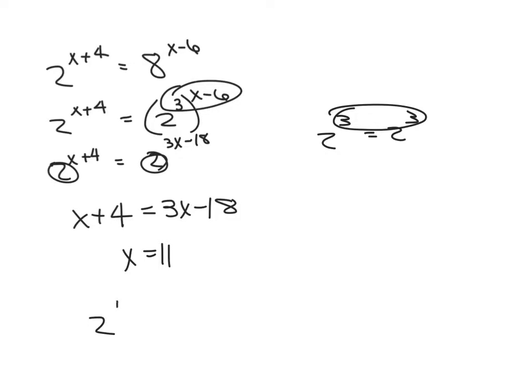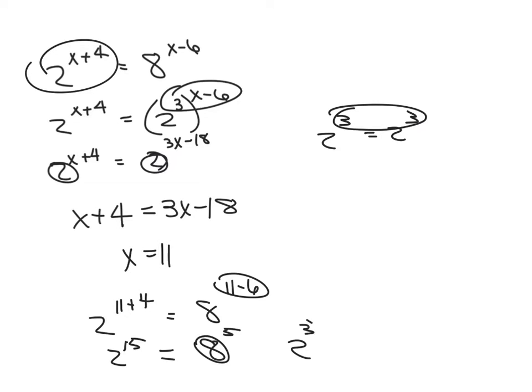So that means 2 to the 11 plus 4, my original problem, is going to be equal to 8 to the 11 minus 6. So let's see what happens here. 2 to the 15th equals 8 to the 5th. Well, 8 can be written as 2 cubed, and that equals 2 to the 15th, which is the same as what I have here. So that's just kind of a check that I did in order to solve that. Next video will be in example 6. See you next time.